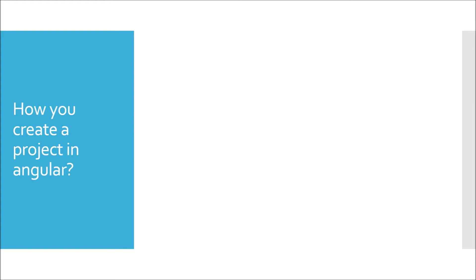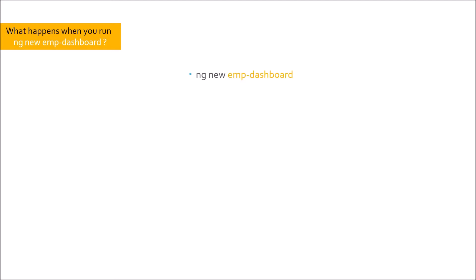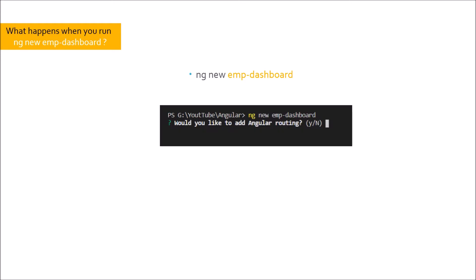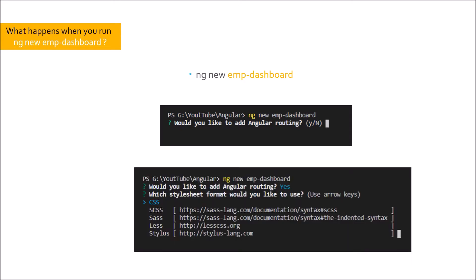Next question: how do you create a project in Angular? You need to fire the command ng new project-name — for example, ng new employee-dashboard. When you fire this command, the terminal first asks whether to add routing to Angular. If you select yes, it then asks for the styling of your project. The default is CSS; other options are SCSS, SASS, LESS, and Stylus.